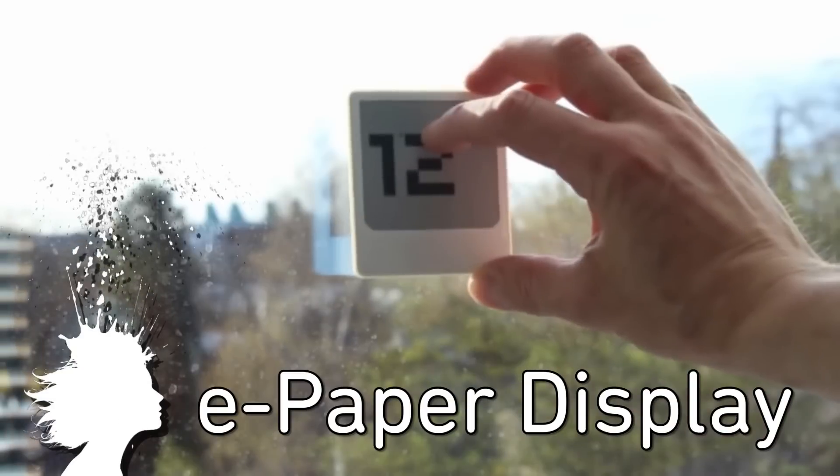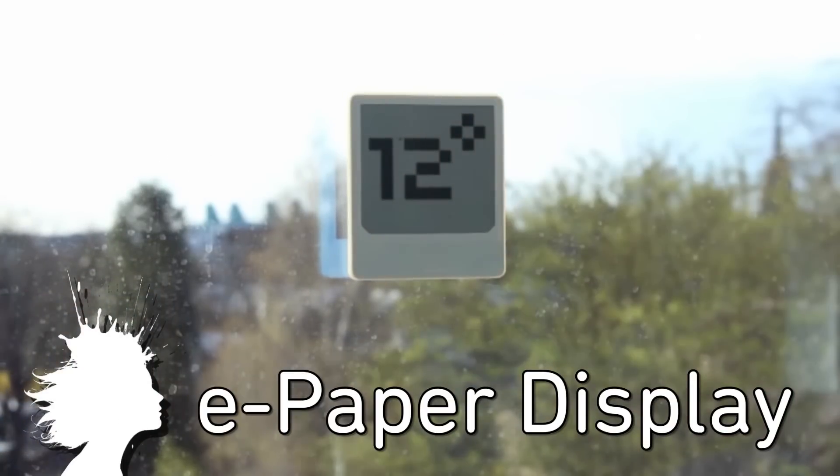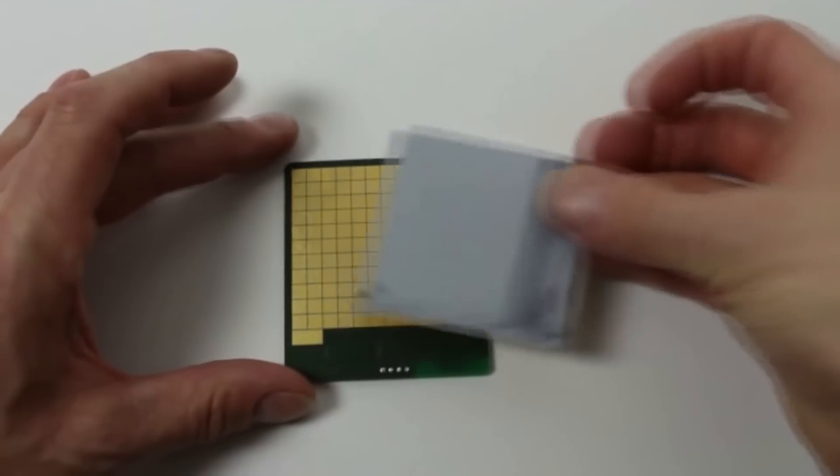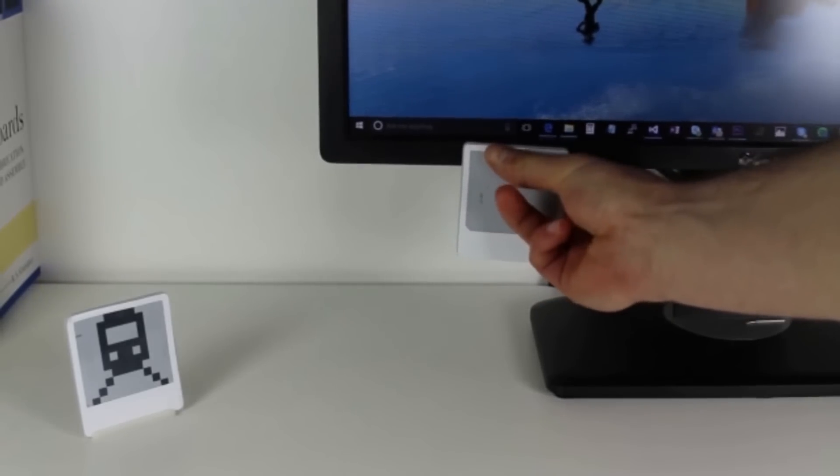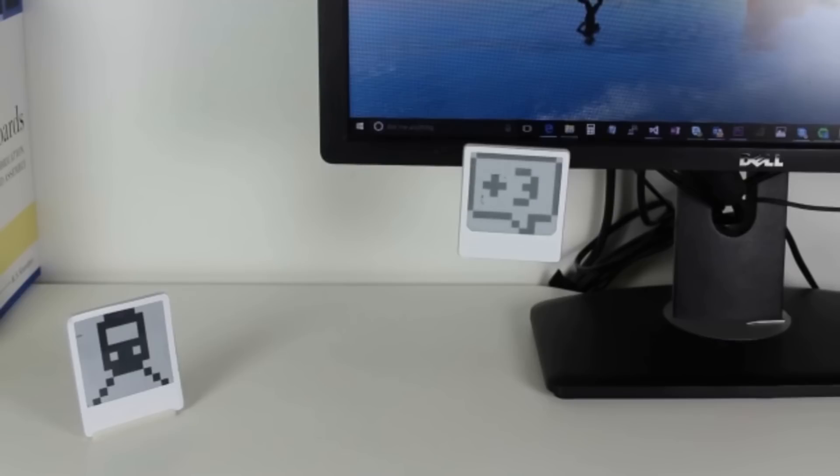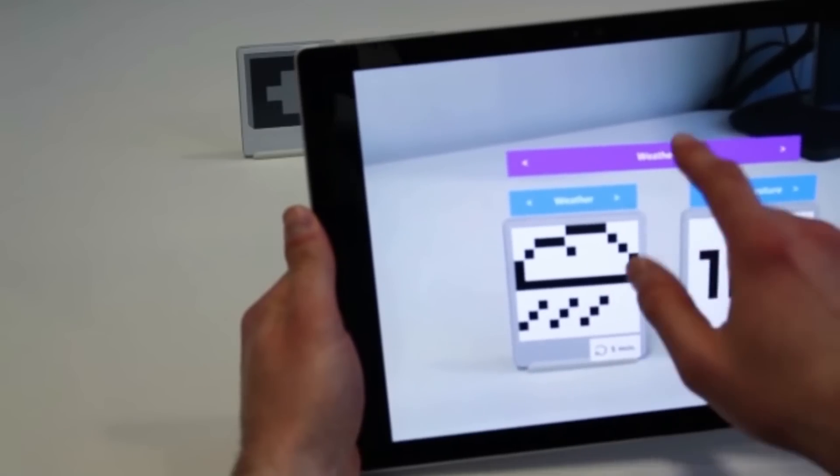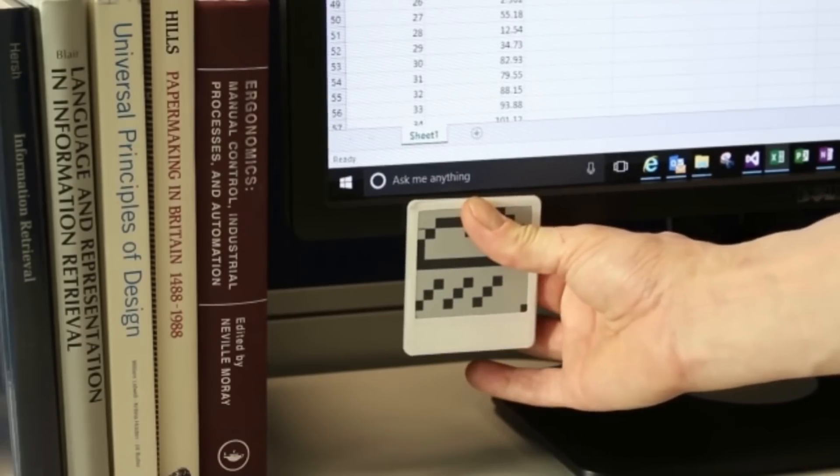These e-paper displays are like reusable digital post-it notes. Microsoft research developed the display to run on office lights using a solar panel on the back. It can communicate with other e-paper displays via Bluetooth, they can be updated with an app and have a sticky back to attach to stuff easily. Right now this is just a prototype and isn't commercially available yet.